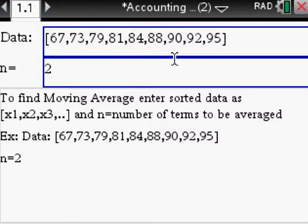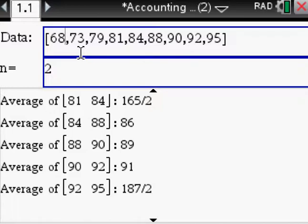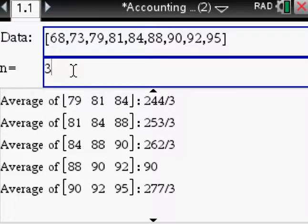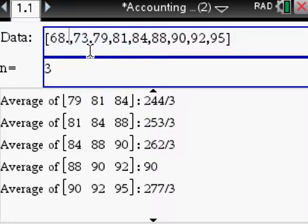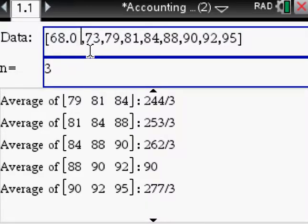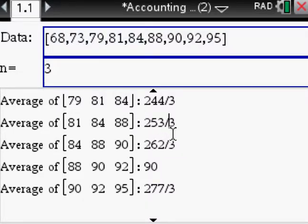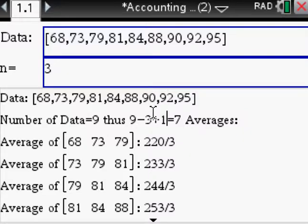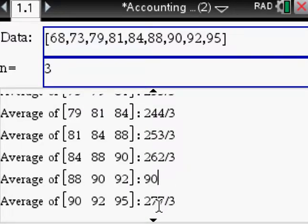And say you want to have a moving average of two, time period of two or time of three, and then you get all your moving averages here. Of course, if you want decimal numbers, just scroll up and then you can see the moving averages right here.